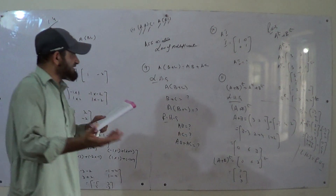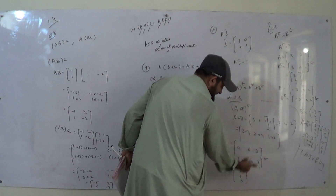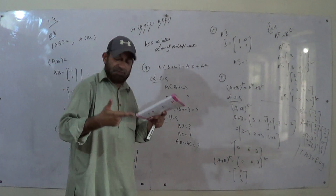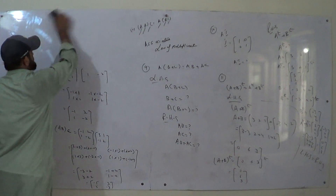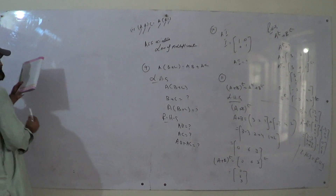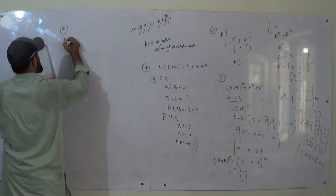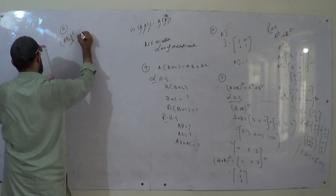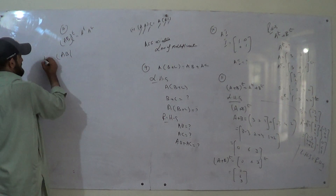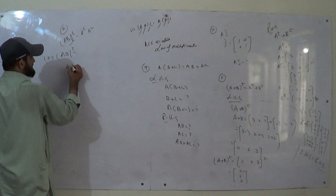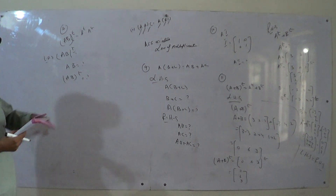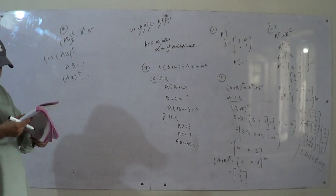Question 12 is also the same. Part 1: (AB) transpose equals B transpose times A transpose. On the left hand side, first we find AB, then find (AB) transpose. On the right hand side, first we find B transpose, then A transpose, and get both answers the same.